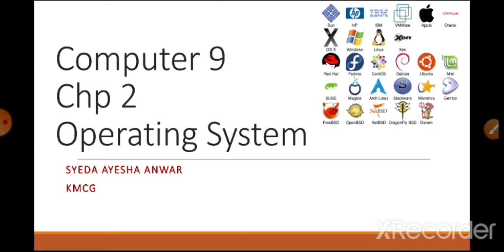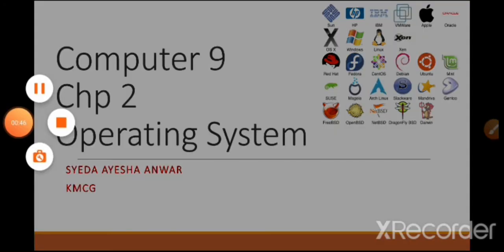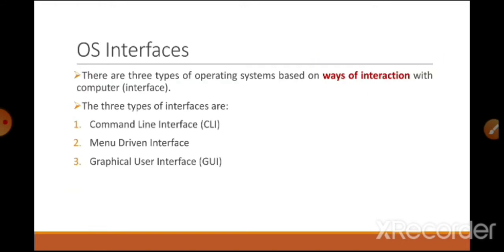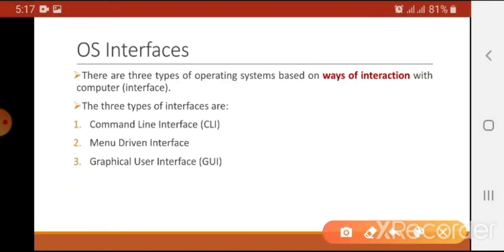Today we are going to learn the third type of interface, which is graphical user interface or GUI. Let's revise operating system interfaces CLI and menu driven, and then study about GUI. There are three types of interfaces: command line interface, menu driven interface, and graphical user interface. We have covered the first two of them.